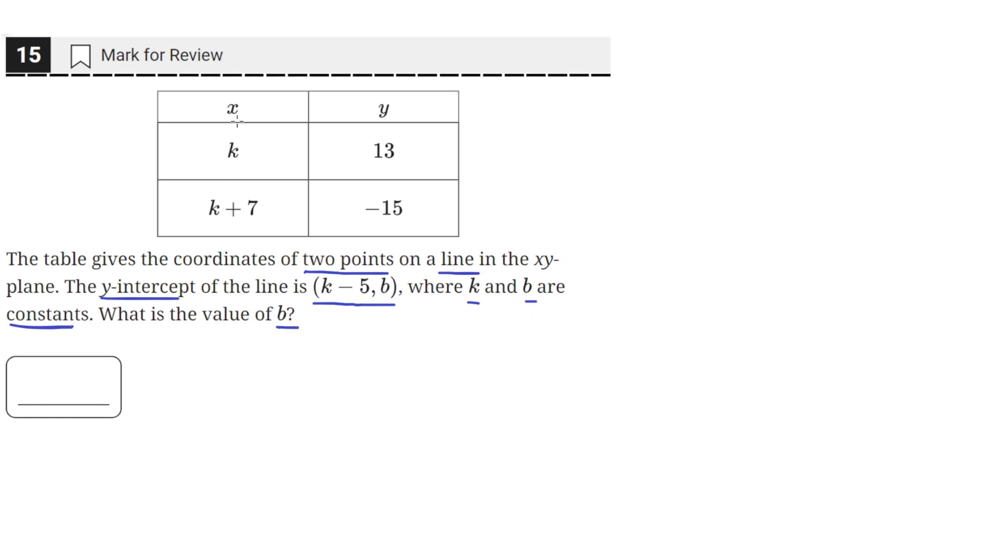Okay, so we have this table that gives us two points, k comma 13 and k plus 7 comma negative 15 that are on a line.